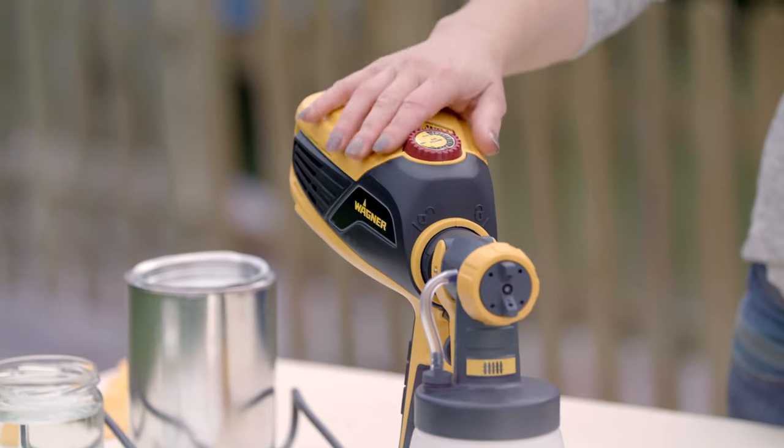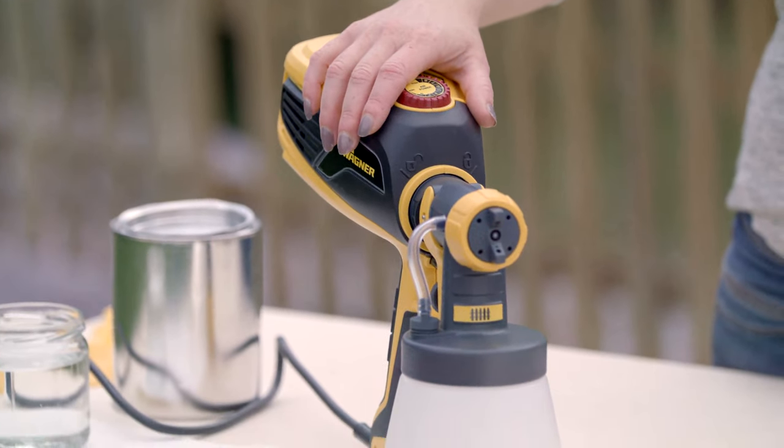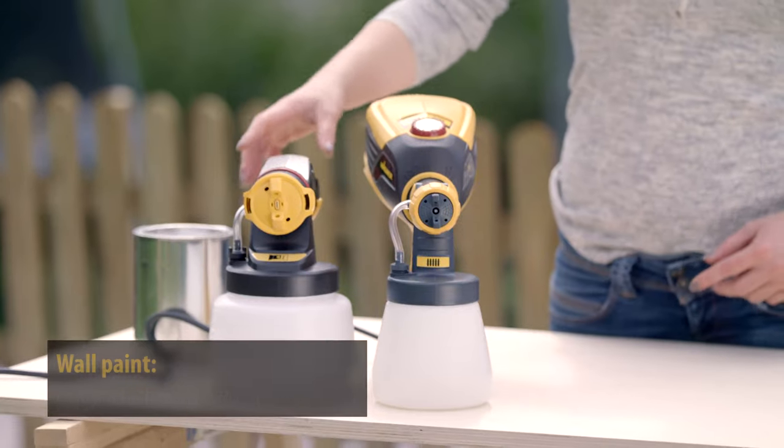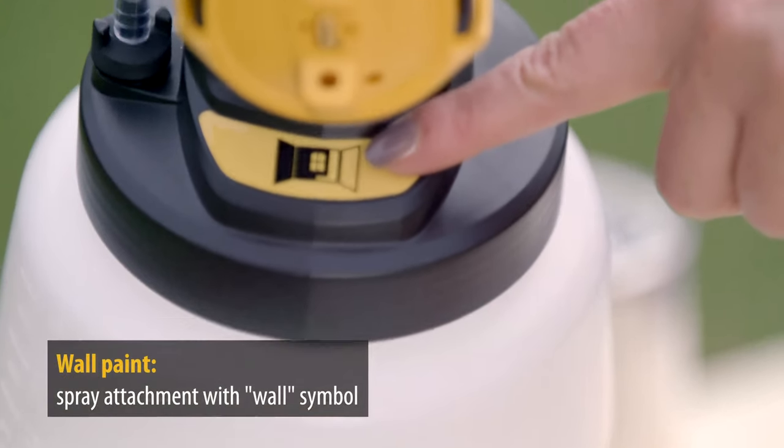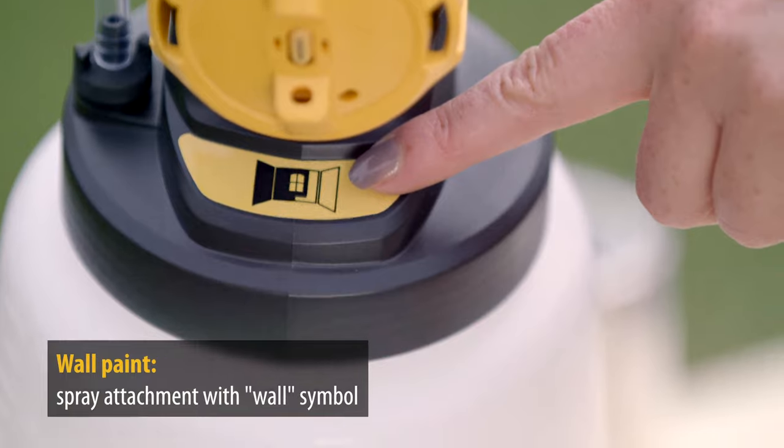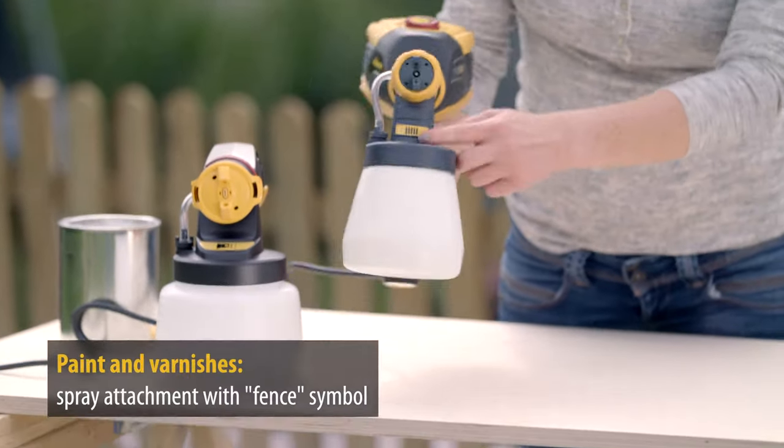For spraying paints and varnishes, use the wood and metal standard spray attachment. The wall symbol means it is for use with interior wall paints. The fence symbol means it is for use with paints and varnishes.